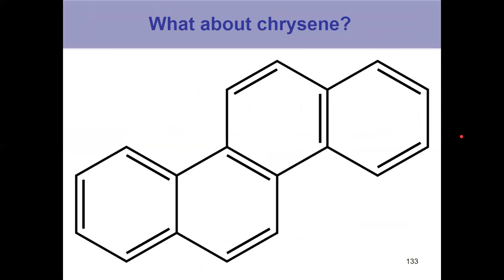Another example, right? Chrysene, is it aromatic? Well, I think to myself, is it cyclic? Bunch of rings? Yes. Is it planar? Yes. How about my electrons?